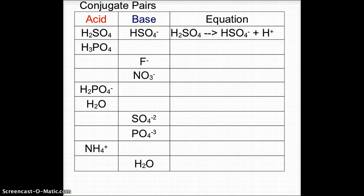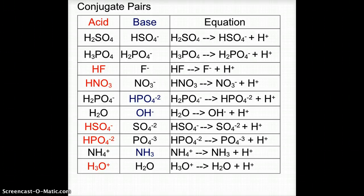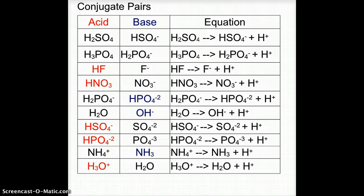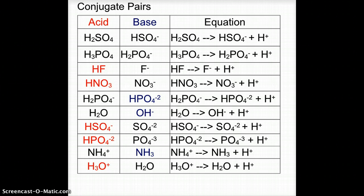Let's see how you did. Notice in each case, the conjugate base will have one less hydrogen than the original acid, and the charge increases by one as it loses that hydrogen. For H₂PO₄⁻, when the hydrogen is donated it becomes HPO₄²⁻. Further down the chart, when HPO₄²⁻ releases its hydrogen we're left with the phosphate ion PO₄³⁻. Go ahead and continue to check your work and make sure the chart is completed correctly.